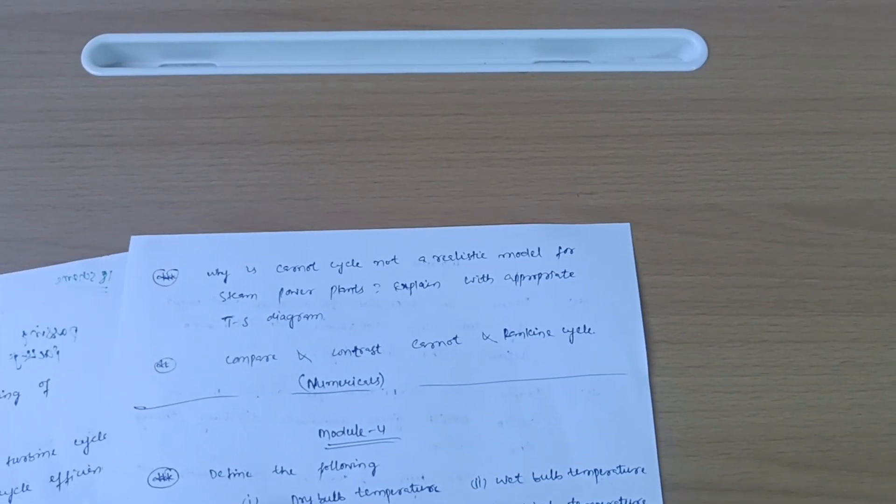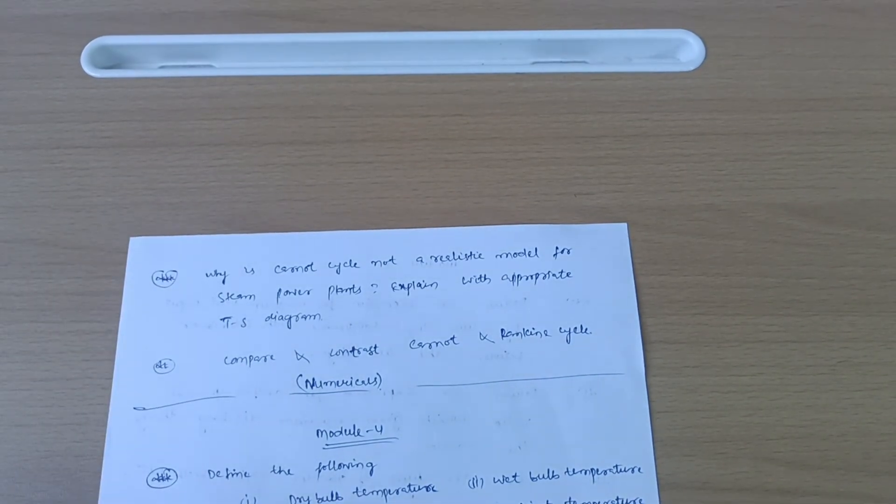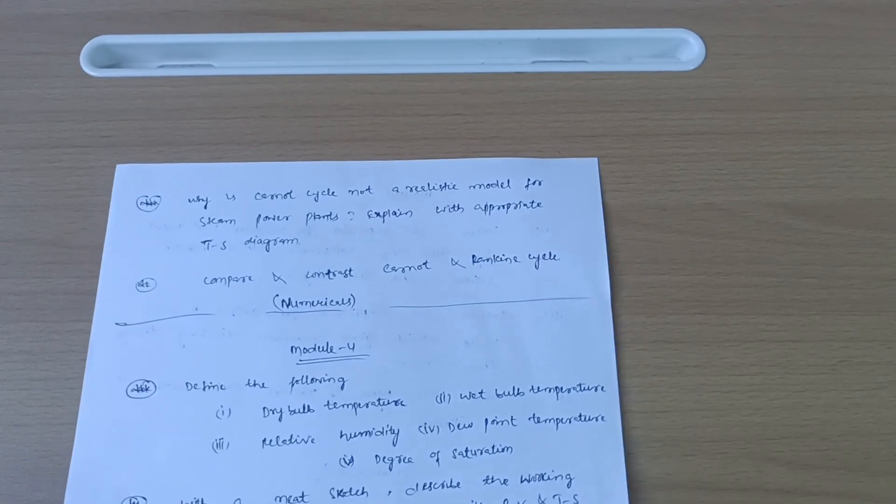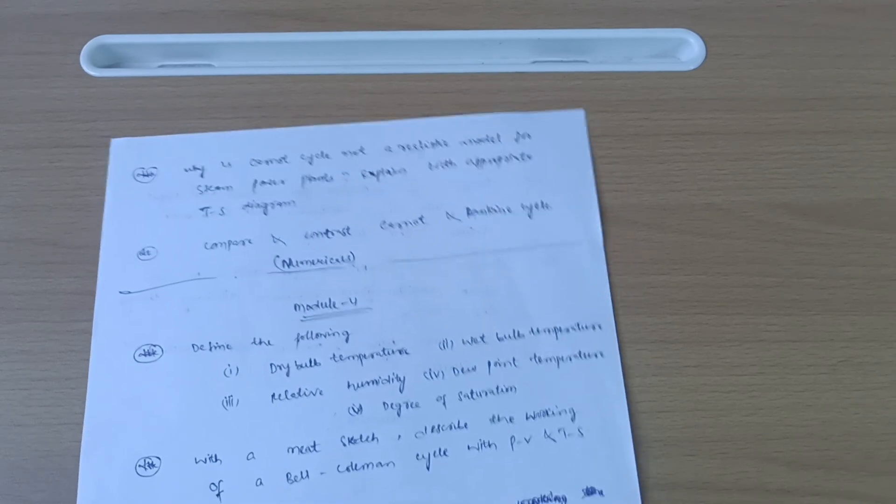Next question: Why is Carnot cycle not a realistic model for steam power plants? Explain with the appropriate TS diagram. Compare and contrast Carnot and Rankine cycle. Also numerical part - it is possible to pass applied thermodynamics with theory only, but sometimes numericals are unexpected and more problematic, so you should focus on numericals also.